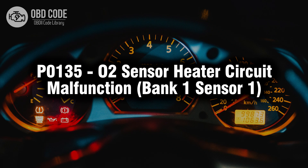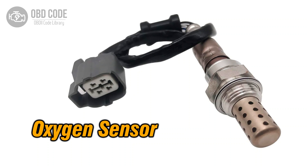Welcome. In this video we will talk about code P0135, its symptoms, causes and possible solutions. The P0135 trouble code indicates a malfunction in the oxygen (O2) sensor heater circuit of the bank 1 sensor 1. This code typically points to issues related to the heating element within the oxygen sensor, which helps the sensor reach operating temperature faster for optimal performance.